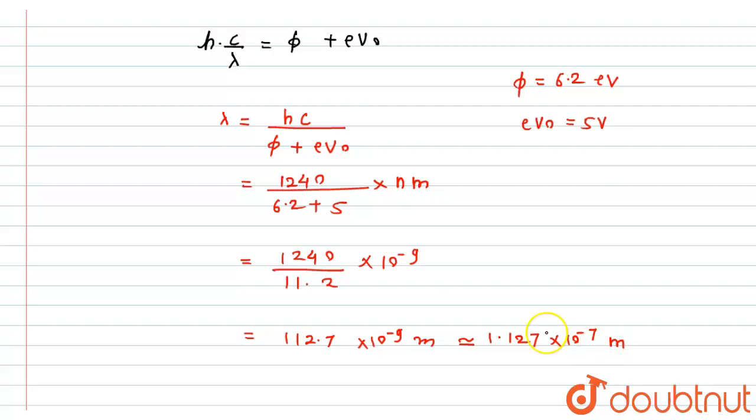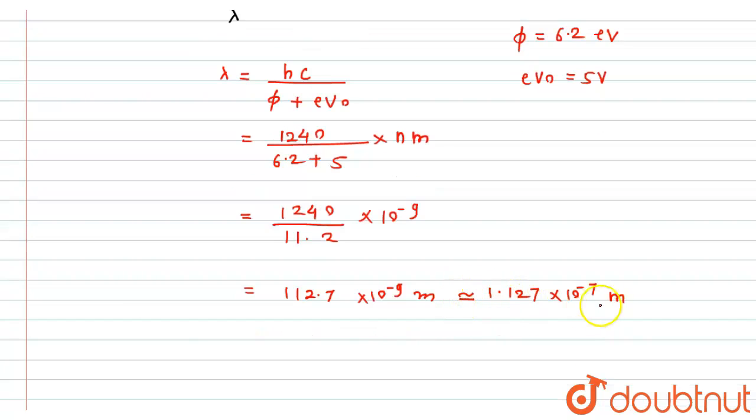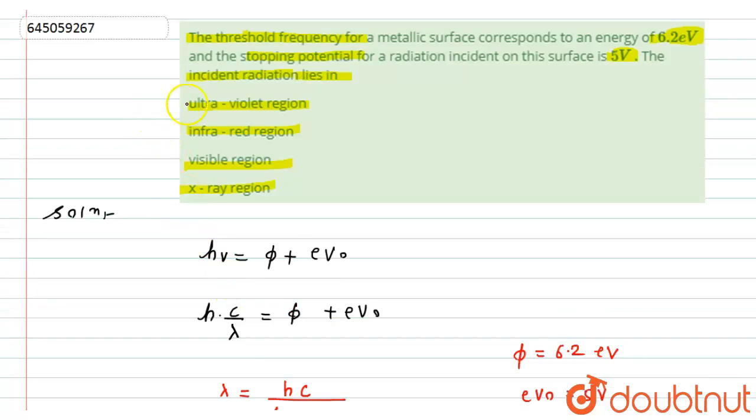That can be approximately written as 1.127 into 10 raise to minus 7 meter. So if we see here, it is just nearest to the value of 10 raise to minus 7. And as we know that the 10 raise to minus 7 range lies in ultraviolet region. So according to option, option number first will be the right answer for this question.